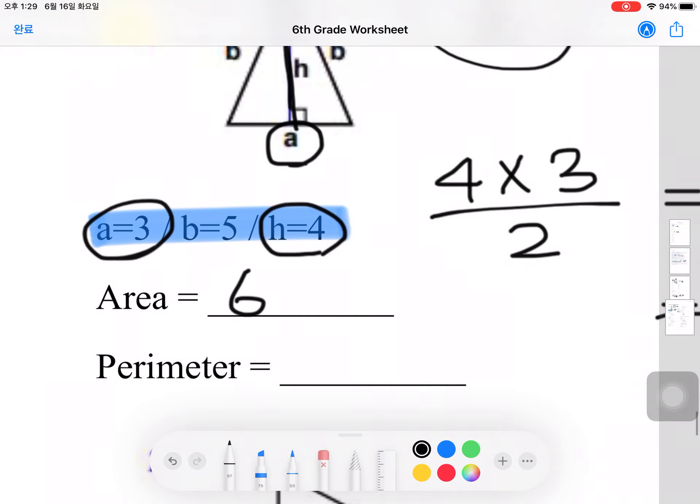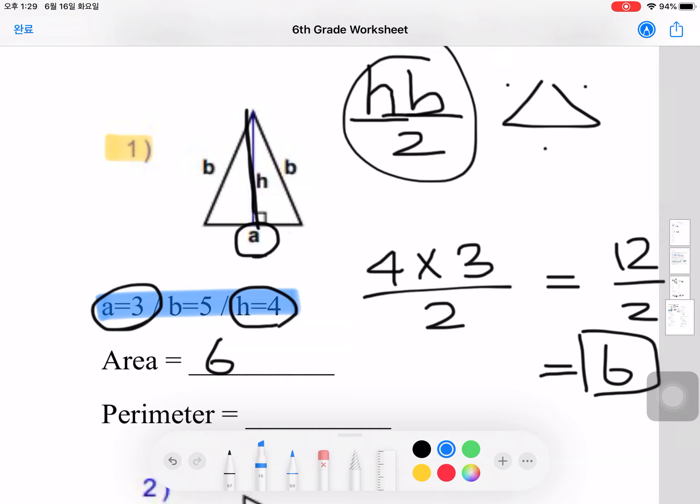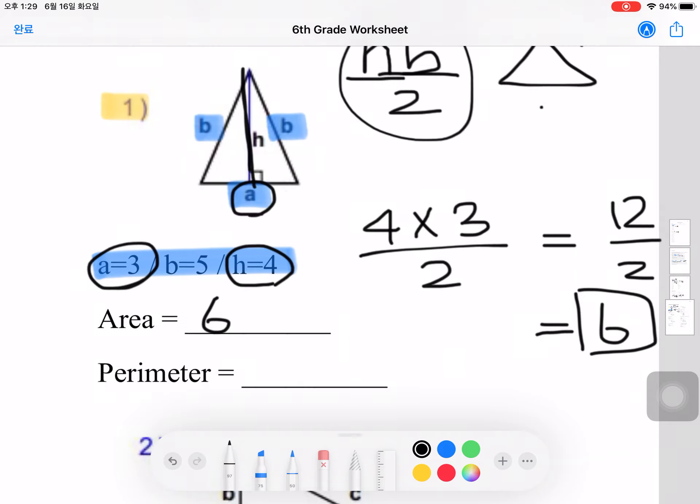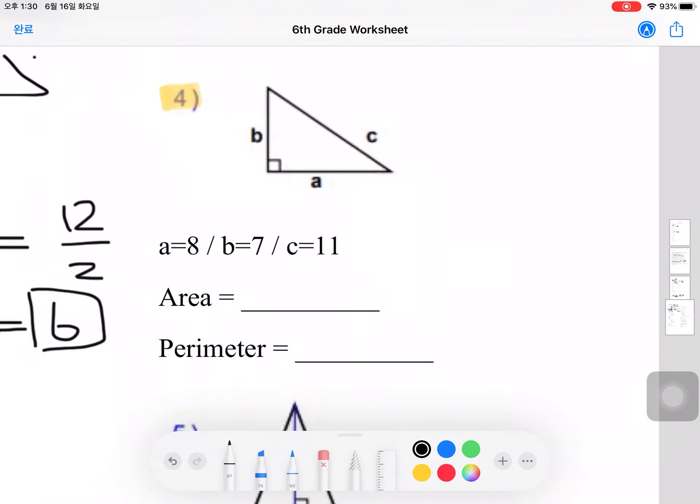Now for the perimeter, we just have to add these up. Since B is 5, it's B plus the other B plus the bottom, which we found out to be 3 earlier. If we add all that up, it comes out to 13. So the perimeter of this particular triangle is 13.